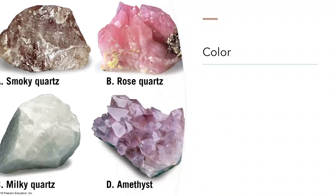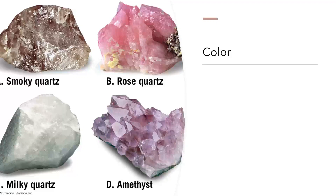Color describes the frequency of light that the human eye detects when it looks at a mineral. Color is also the most obvious characteristic of a mineral, but it's also the least useful if we're trying to figure out what kind of mineral we're looking at.